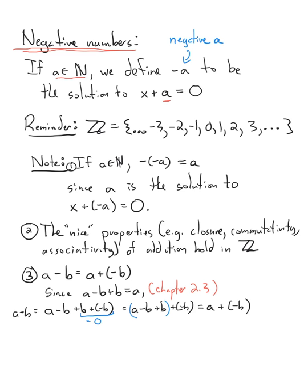So for example, if a was three, then what plus three gives you zero? We're going to say that negative three is that number. We didn't define negative numbers yet, so we're just going to say it's a number that when you add it to a counting number, you get zero. That's going to be its negative.